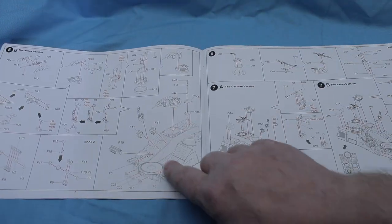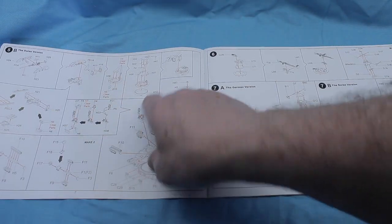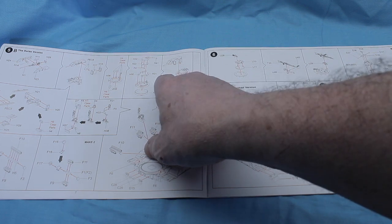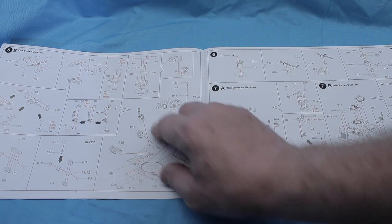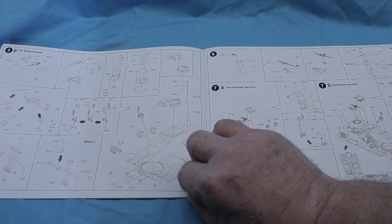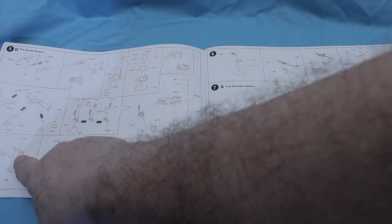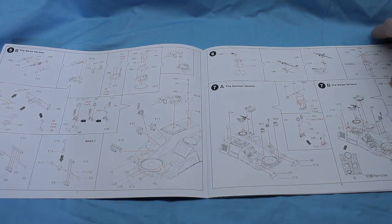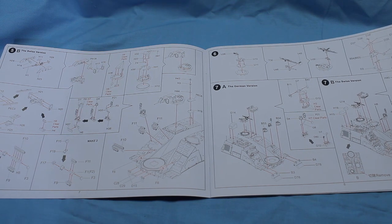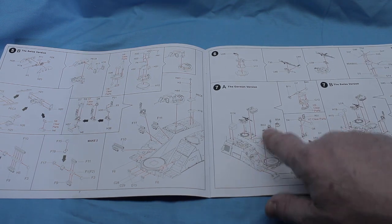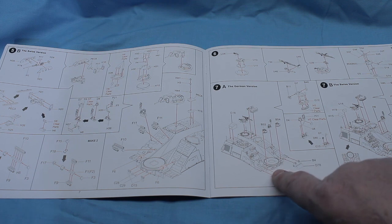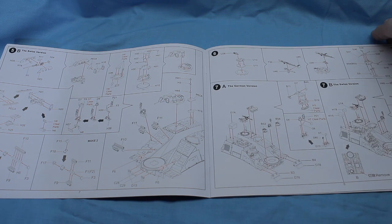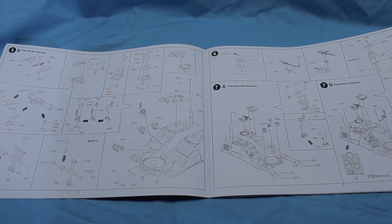And you can see, working through here, the Swiss version has a remote gun on the top, and the German version has the standard air defense MG. Here's the smoke launchers part here, which look more like a standard German on the Leopard tanks, which you would see.